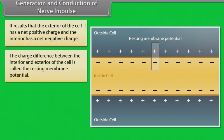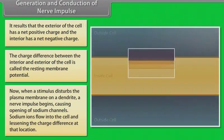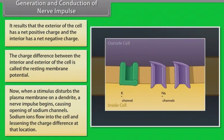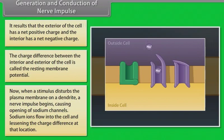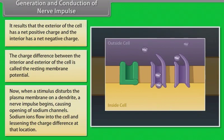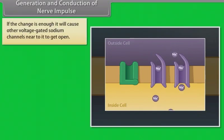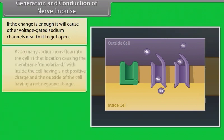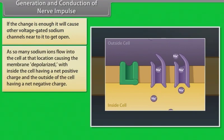The charge difference between the interior and exterior of the cell is called the resting membrane potential. When a stimulus disturbs the plasma membrane on a dendrite, a nerve impulse begins, causing the opening of sodium channels. Sodium ions flow into the cell and lessen the charge difference at that location. If the charge is enough, it will cause other voltage-gated sodium channels nearby to open.